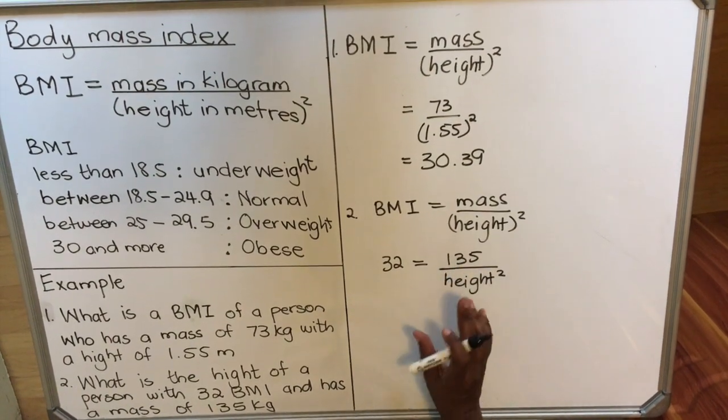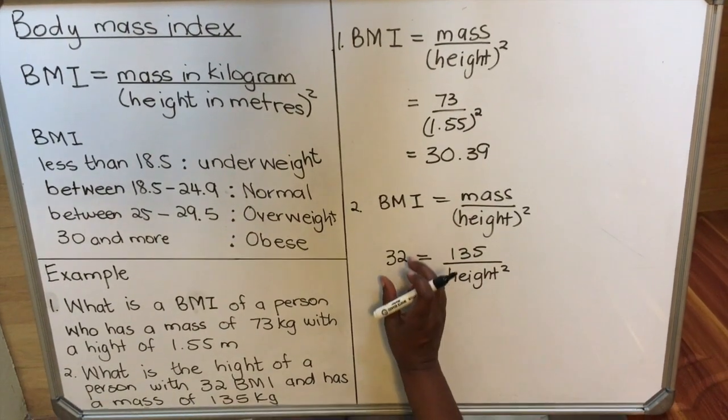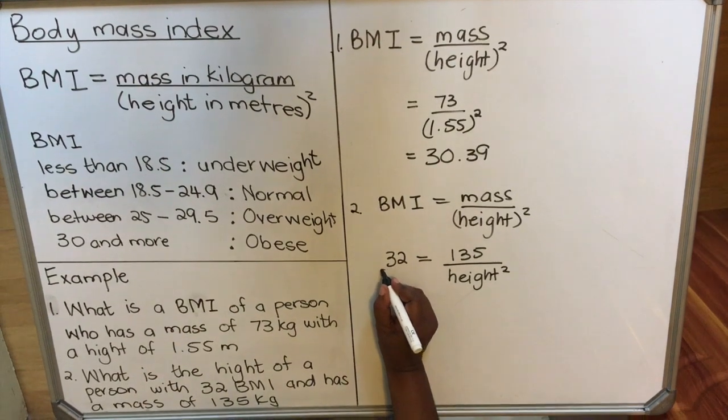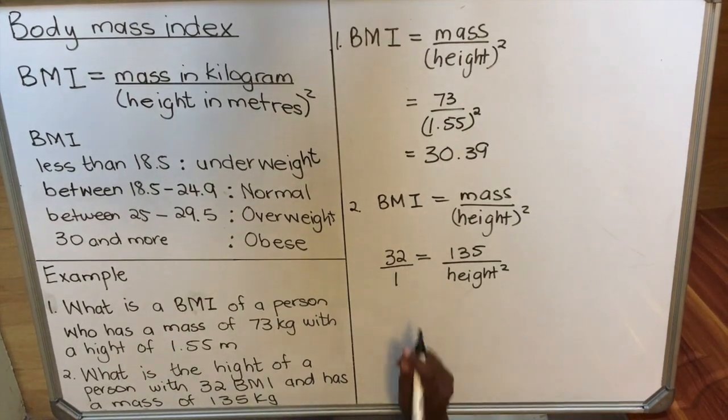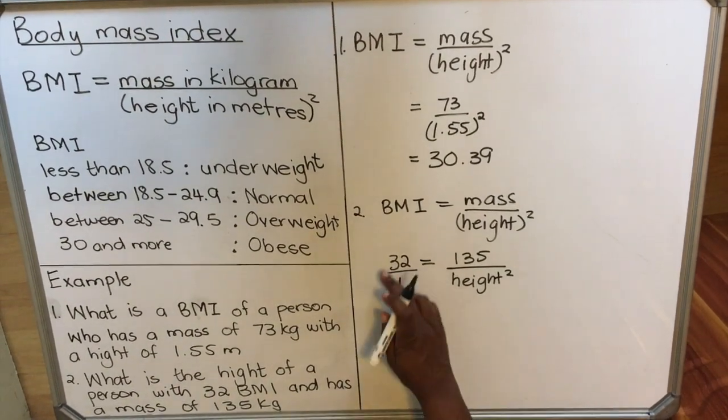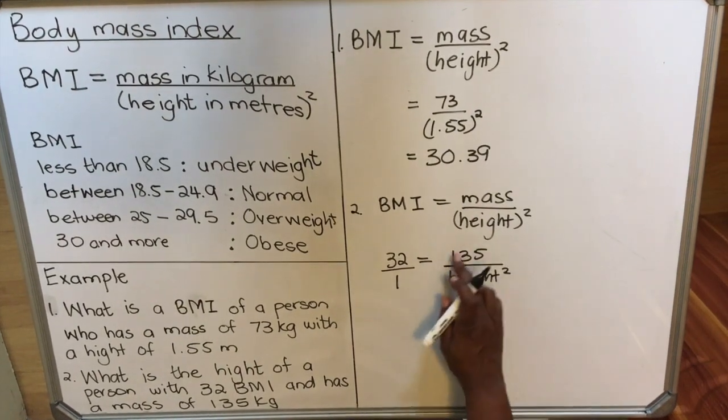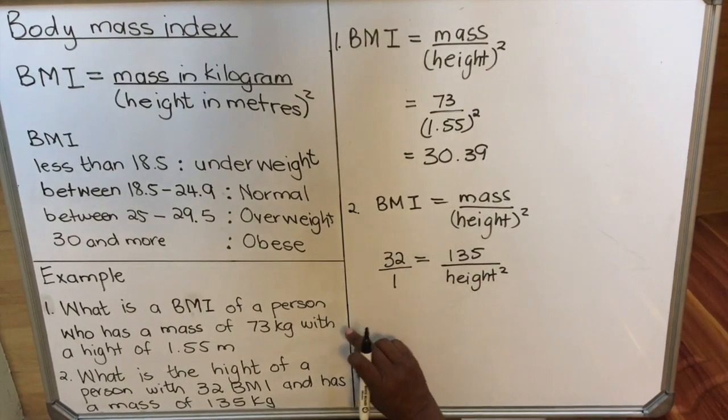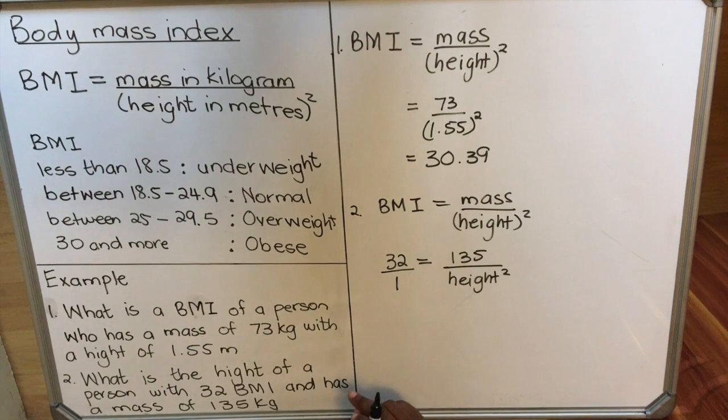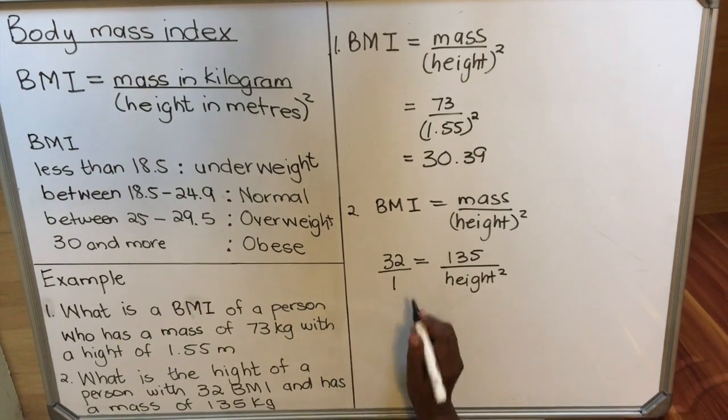When you get a question like that, as you were taught in grade 8, you have one fraction—you make this a fraction. Any number divided by 1 becomes a fraction. You have a fraction, an equal sign, and a fraction. You can cross multiply.